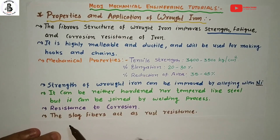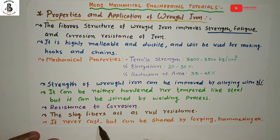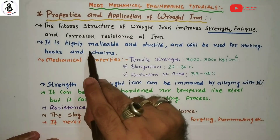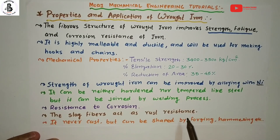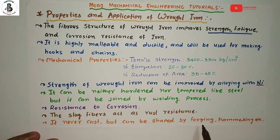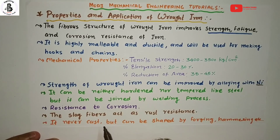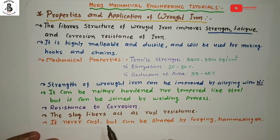Wrought iron has poor castability — it cannot be cast. However, it can be shaped by forging, hammering, or any metal forming process, because it is highly malleable and ductile, making it easy to convert into desired shapes and sizes. If you want to perform a casting process to manufacture components, that will be difficult with wrought irons. Poor castability is one of the key limitations of wrought iron — also a common MCQ question.